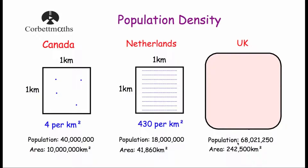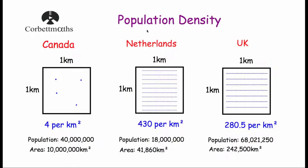The United Kingdom has a population of 68,021,250 and an area of 242,500 kilometres squared. If we divide the United Kingdom into 242,500 squares, each measuring one kilometre by one kilometre, and share the population out equally, you'd have a population density of 280.5 per kilometre squared. You would obviously use this as accurately as possible in your calculations, so the population density of the United Kingdom is 280.5 per kilometre squared.